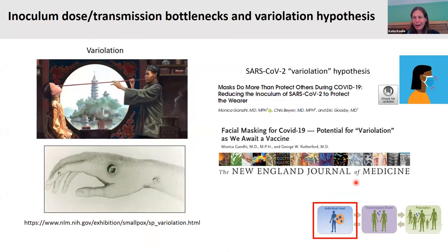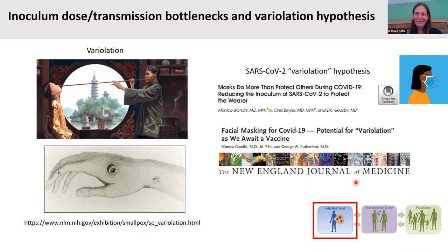There's also this intriguing question — covered quite a bit in the media — of what the effective inoculum dose is for SARS-CoV-2. This has led to the 'variolation hypothesis.' Variolation goes back to 15th century China and was developed in the context of smallpox, which had mortality rates of about one in three — considerably higher than SARS-CoV-2.